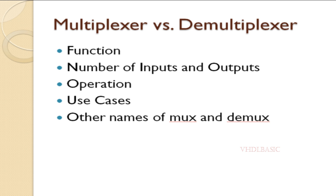In digital electronics, a MUX is also known by various other names and abbreviations. It is often called a data selector because it selects one of several input data signals to be routed to the output. Data MUX is a shorter abbreviation of data multiplexer.